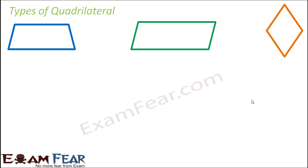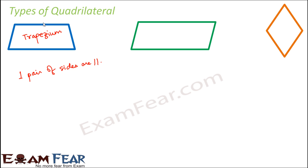The first type of quadrilateral we will talk about is a trapezium. This is how a trapezium looks like. The most important feature of a trapezium is that one pair of sides are parallel. When I say one pair of sides are parallel, those sides have to be opposite sides, because adjacent sides will never be parallel — they meet at a point so they can't be parallel.